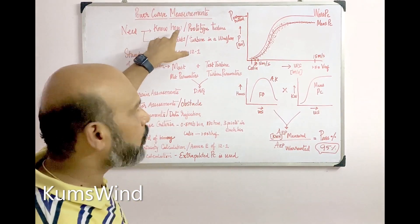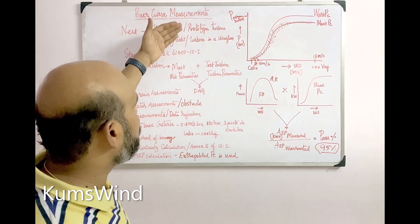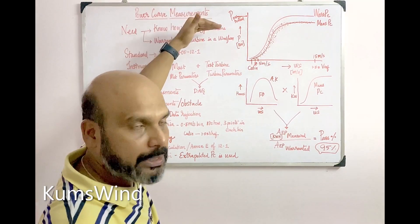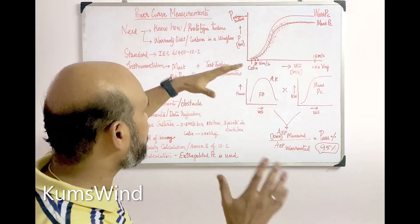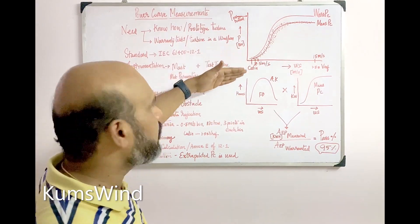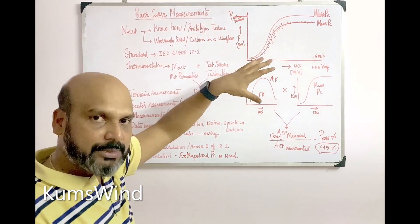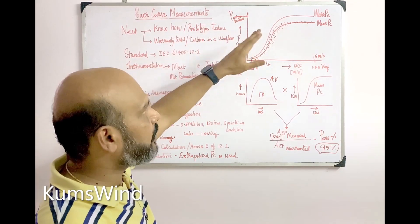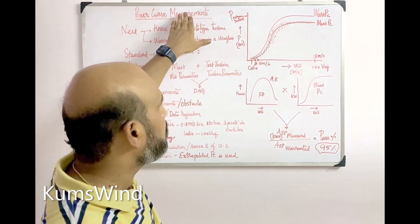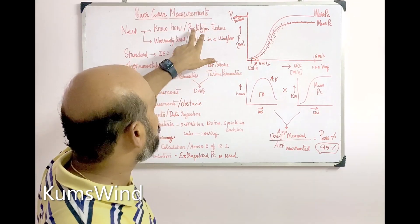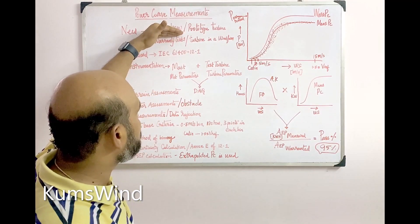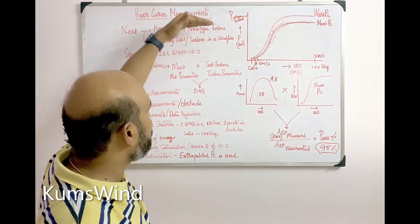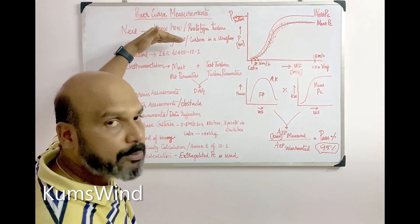There are two needs for power curve measurement. The first is to know the performance of the turbine, which is normally done at the prototyping stage. When the first prototype is made and taken to the field for type testing, the mandatory and vital measurement is the power curve measurement. This is the know-how process which takes place at the prototyping stage.